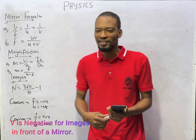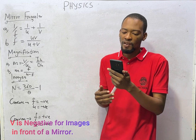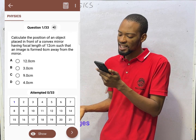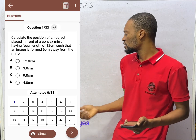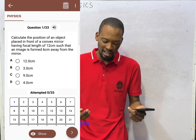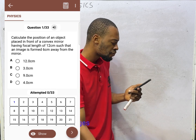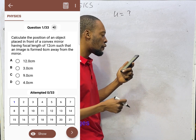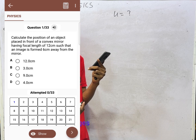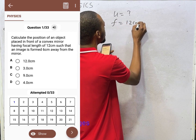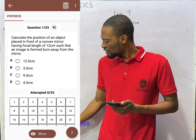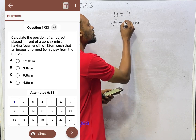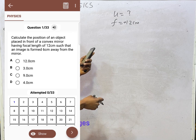From the Flash Learners application, the first question: calculate the position of an object placed in front of a convex mirror having focal length of 12 centimeters, such that an image formed is 6 centimeters away from the mirror. When given questions, break them down and pick out the data. We are asked to find the object distance (U). The object is placed in front of a convex mirror, so the focal length is positive — f = +12 cm. For a concave mirror you would use minus, but here it remains positive.